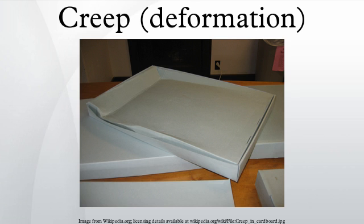Both polymers and metals can creep. Polymers experience significant creep at temperatures above approximately 200 degrees Celsius. However, there are three main differences between polymeric and metallic creep. Polymers show creep basically in two different ways: at typical workloads, ultra-high molecular weight polyethylene will show time-linear creep, whereas polyester or aramids will show a time-logarithmic creep.